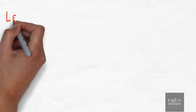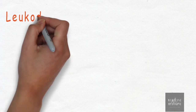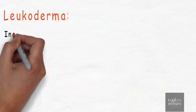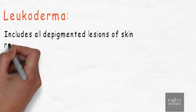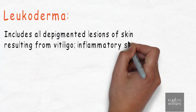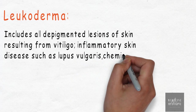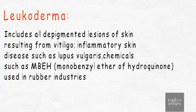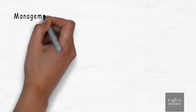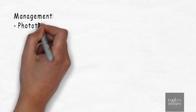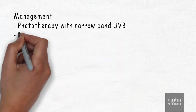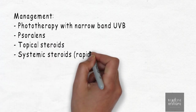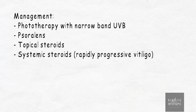Not all depigmented lesions are vitiligo. They are described by a special term called leukoderma, which includes all depigmented lesions of skin resulting from vitiligo, inflammatory skin diseases such as lupus vulgaris, or from chemicals such as monobenzyl ether of hydroquinone. Management can be done with phototherapy using UVB rays, psoralens, topical steroids, and systemic steroids in cases of rapidly progressive vitiligo.